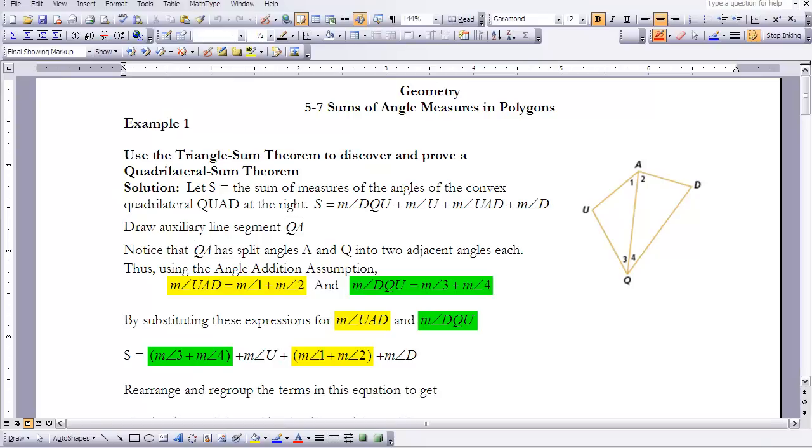Let's take a look at this first quadrilateral. We're going to let S equal the sum of the measures of all the angles of this quadrilateral. We're going to take a look at angle DQU, angle U, angle UAD, and angle D. So we're going to start by drawing an auxiliary segment, line segment AQ. Notice that splits angle UAD into two angles and splits angle UQD into two angles as well.